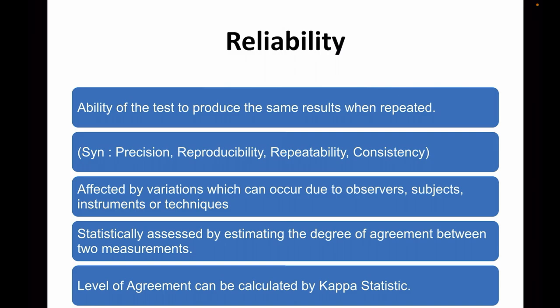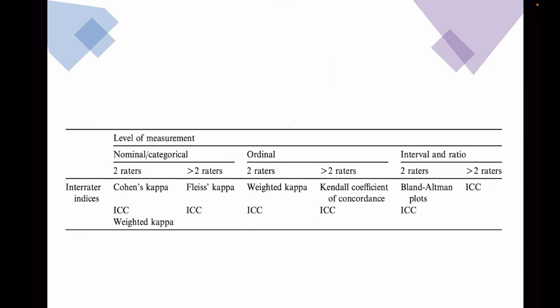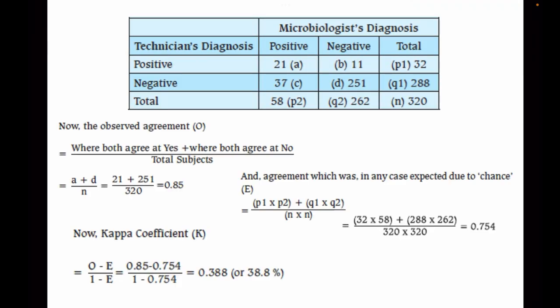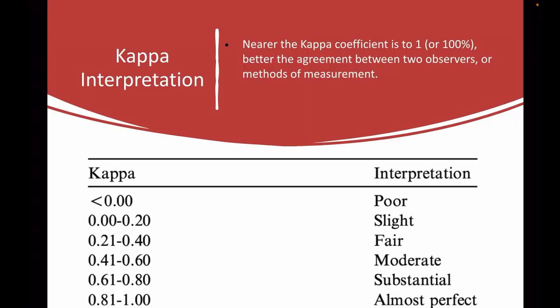To sum up: reliability or repeatability is the ability of the test to produce the same results when repeated. Statistically, it is measured in terms of the degree of agreement between two measurements. Kappa statistic is the test of choice when using nominal or categorical variables to test the level of agreement between two raters — Cohen's kappa — given by the formula (observed − expected) / (1 − expected). Thanks for watching. If you like this video, please click like, share it with your friends, and subscribe to the channel.